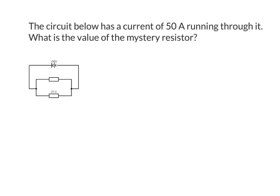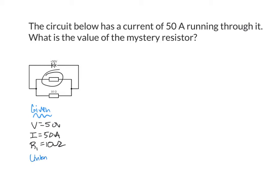In that last problem, we found the equivalent resistance of the circuit and then used that in Ohm's Law to figure out the current running through our circuit. Now we're going to do the exact opposite. The circuit below has a current of 50 amps running through it, and we're going to figure out the value of the mystery resistor. Our givens are that the voltage is 50 volts, the current is 50 amps, and the value of one resistor is 10 ohms. My unknown is R2, the mystery resistor.